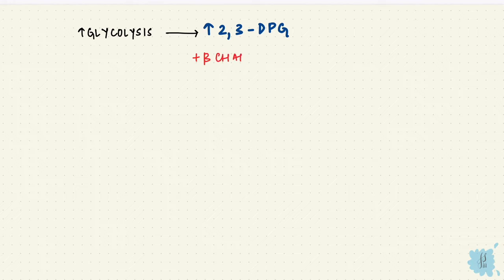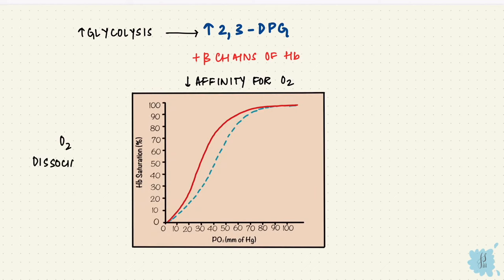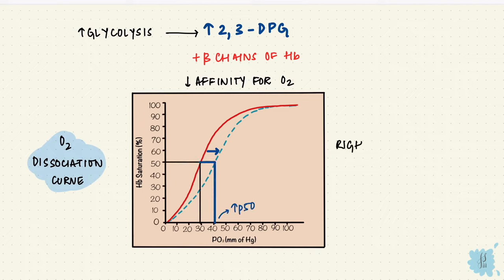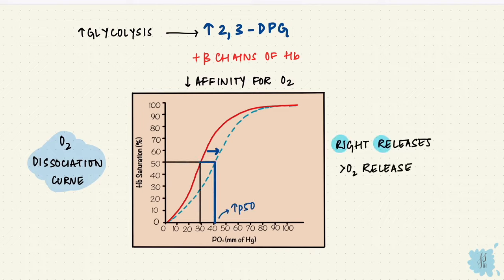Increased RBC glycolysis increases 2,3-diphosphoglycerate. This 2,3-DPG binds to the beta chains of hemoglobin, reducing its affinity for oxygen, and that shifts the oxygen dissociation curve to the right. There's an increased p50, and right releases, so there's more oxygen released to the tissues.